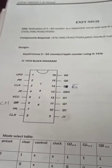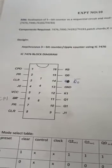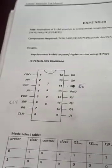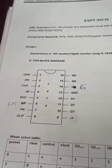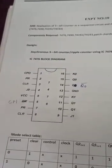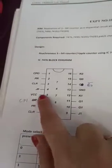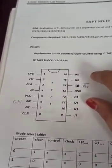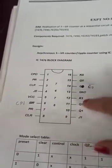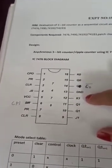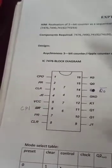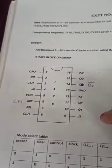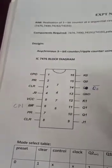First we are going to learn the JK flip-flop. You can see IC 7476. Using this IC, we are going to find out the operations of JK, D, and T flip-flop. This IC has 2 flip-flops. The inputs are J0 and K0 for one flip-flop, or J1 and K1 for the other. In this experiment, we are going to use the flip-flop with inputs J0 and K0.